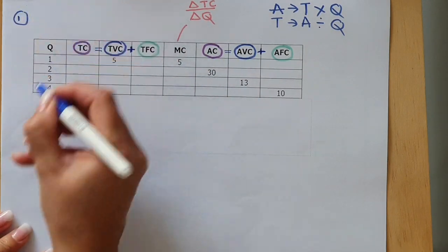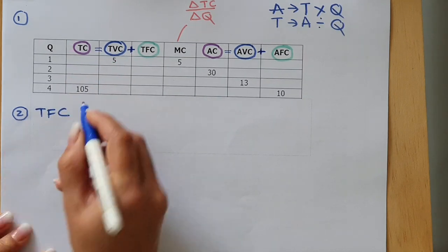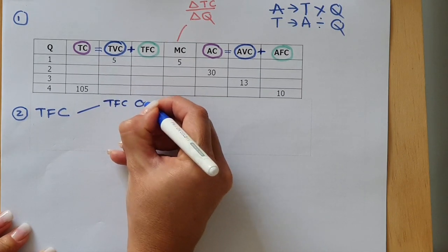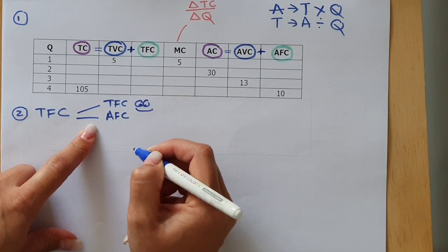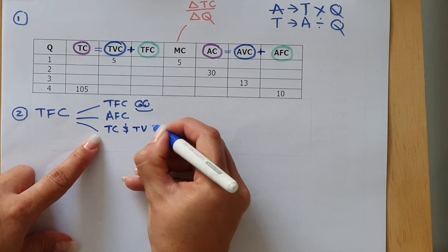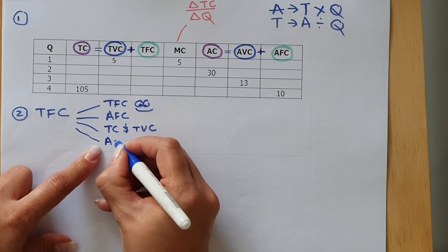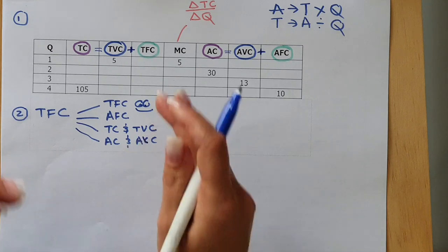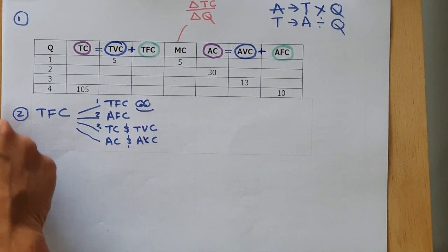The second step is to look for and complete Total Fixed Cost. You can get that in various ways. First, look and see if Total Fixed Cost is already given in the column provided. If not, check the Average Fixed Cost column. If there's nothing there, check whether Total Cost and Total Variable Cost are given, because then you can calculate Total Fixed Cost. If not, check whether Average Cost and Average Variable Cost are given, because you can revert those back to totals. Normally by the third option you are sorted.